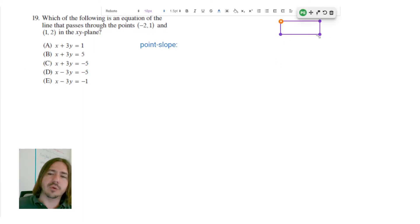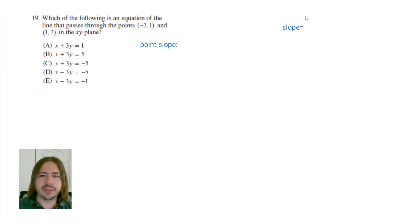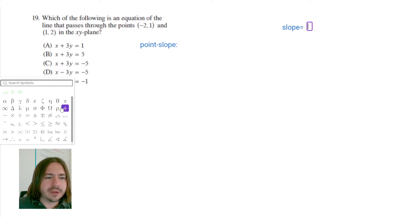So I'm going to do a little work out to the side here. So to find the slope, the slope is going to equal the change in y divided by the change in x. So change in y divided by change in x.